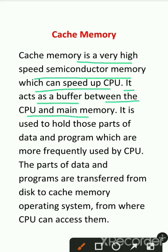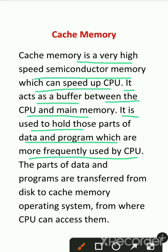Main memory is used to hold those parts of the data and programs which are more frequently used by the CPU. Cache memory is used when we use data or program parts which are frequently used by the CPU.